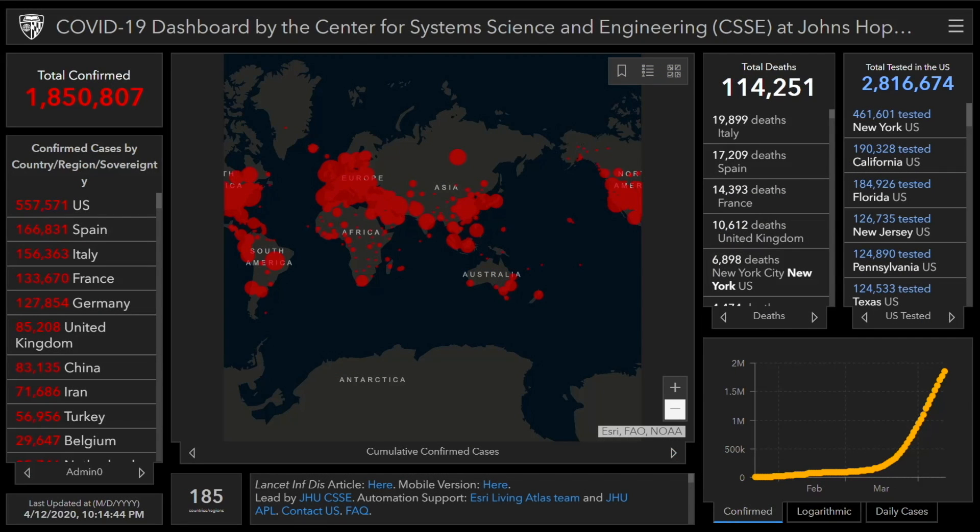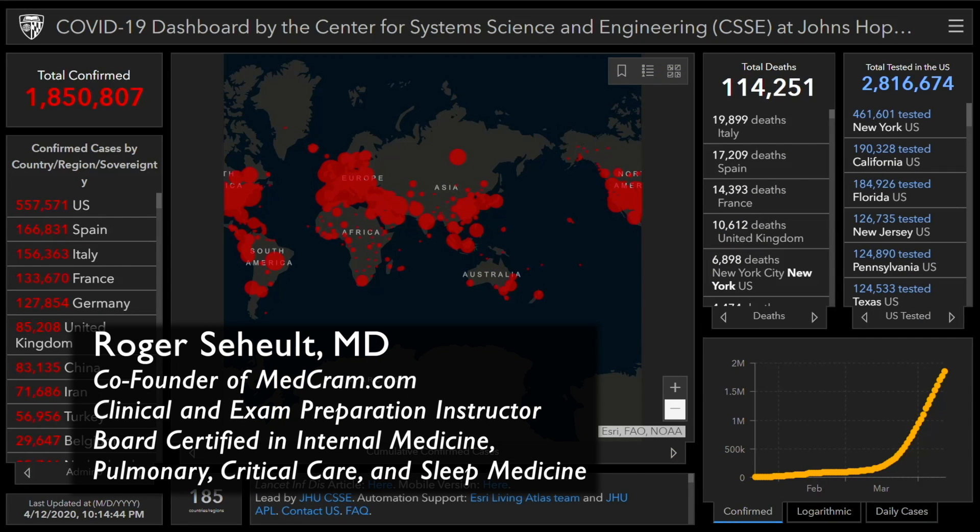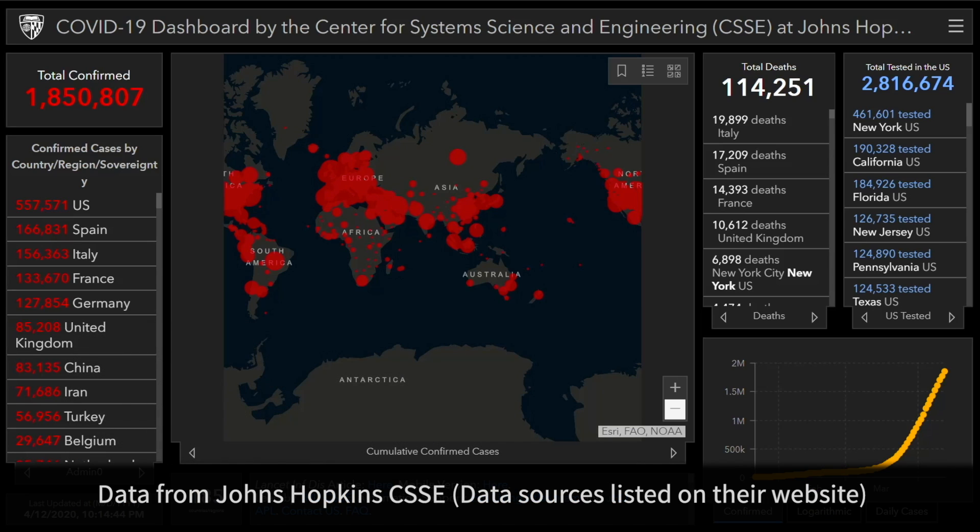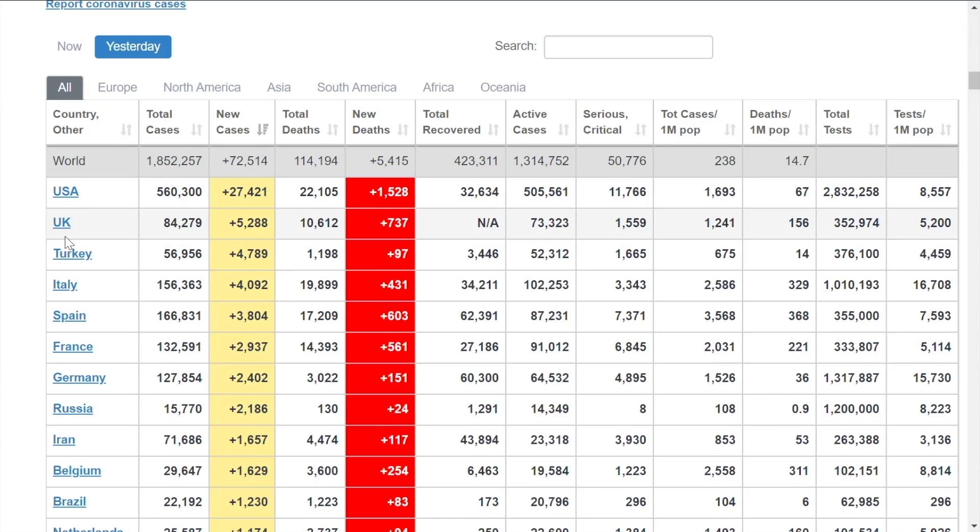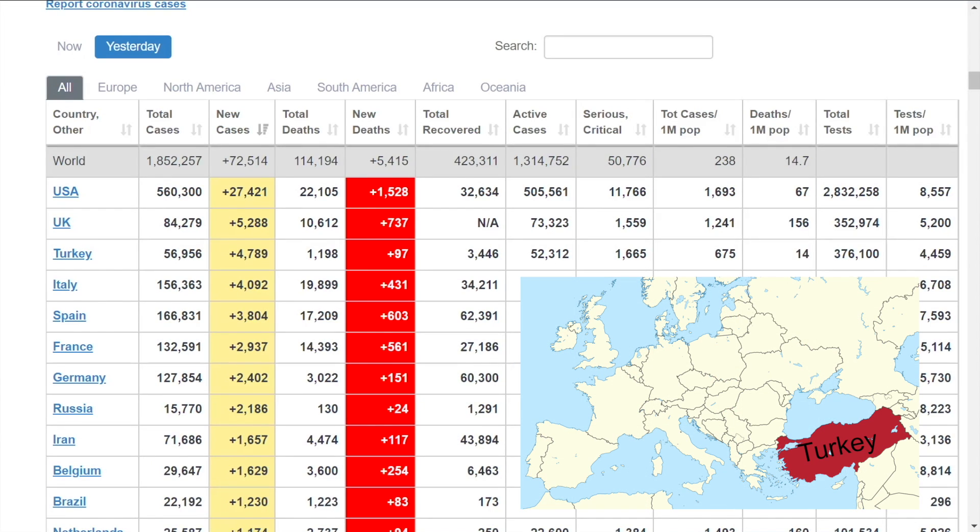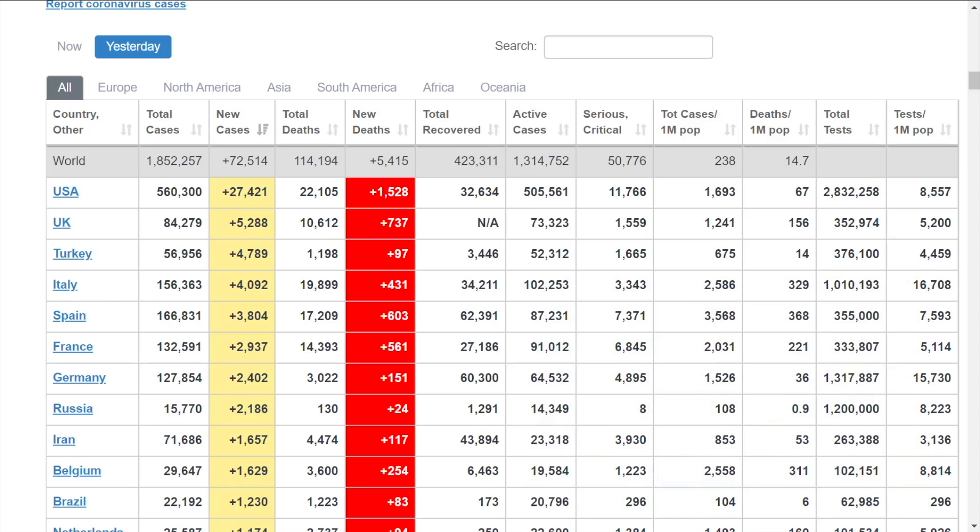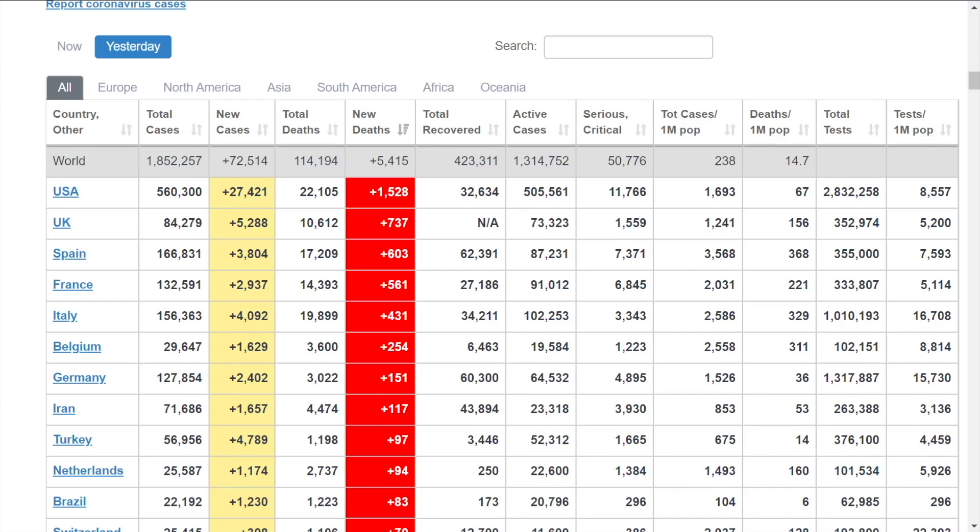MedCram.com. Welcome to another MedCram COVID-19 update. We are headed close to 2 million total confirmed and 114,000 total deaths, and Turkey actually is moving up in terms of new cases. The United States and the UK are both also at the top in terms of new deaths.